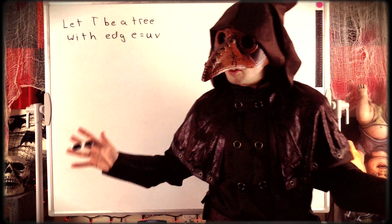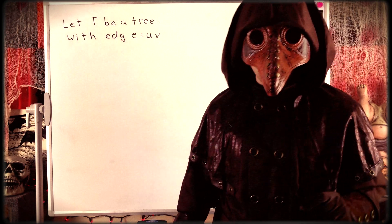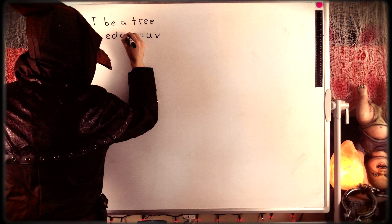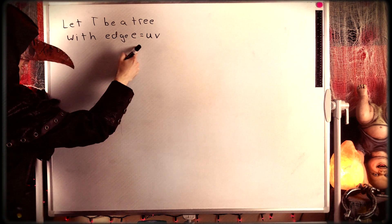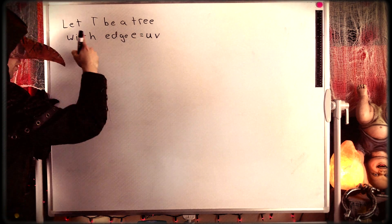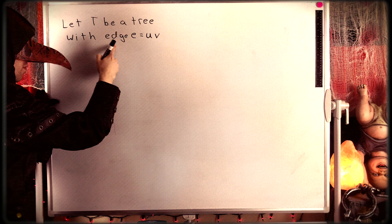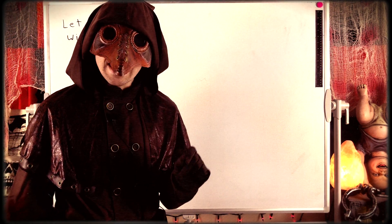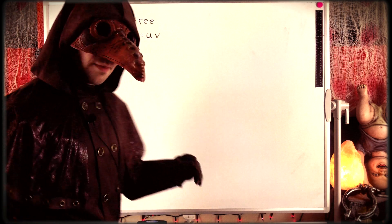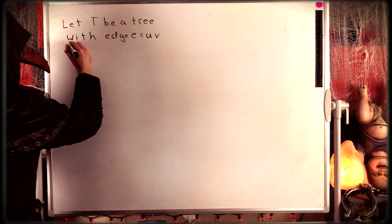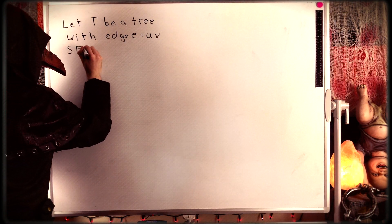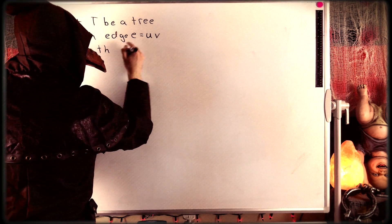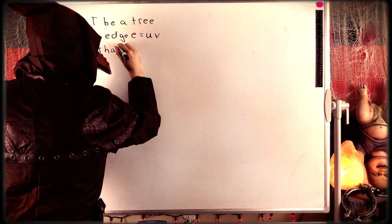This is going to be a nice and quick proof by contradiction. Since we want to prove that E must be a bridge, we'll suppose for contradiction that E is not a bridge. So SFC — suppose for contradiction that our edge E is not a bridge.